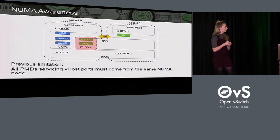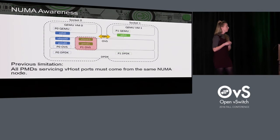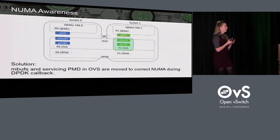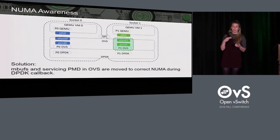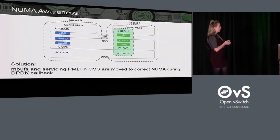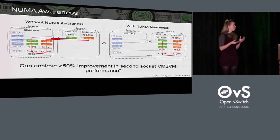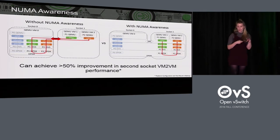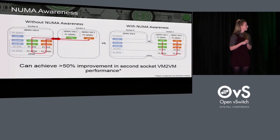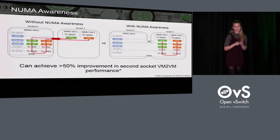But the picture still isn't complete. In OVS, the PMD thread servicing that port is still on the incorrect socket, because prior to this feature, OVS wasn't NUMA-aware and didn't know what socket the vhost user port was on. Now, with this DPDK feature, we can retrieve that information from DPDK and relocate the PMD threads if necessary. All of the memory is now on the correct socket — the most optimal configuration. Performance-wise, I measured a VM-to-VM test on the second socket and saw a 50% increase in throughput for 64-byte packets for this type of scenario.